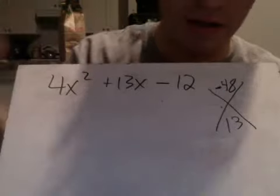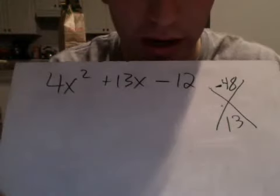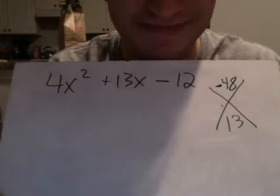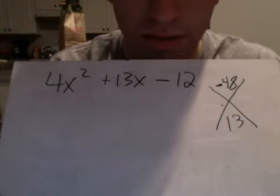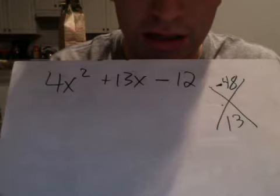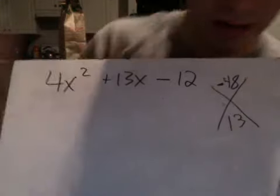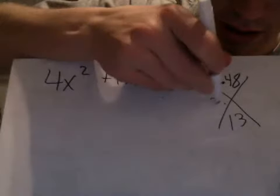If you get stuck, I start kind of just listing them in my head, and I start at 1. 1 and 48? No. 2 and 24? No. 3 and 16. I think that's going to be it. 3 and 16 are going to be my two numbers.